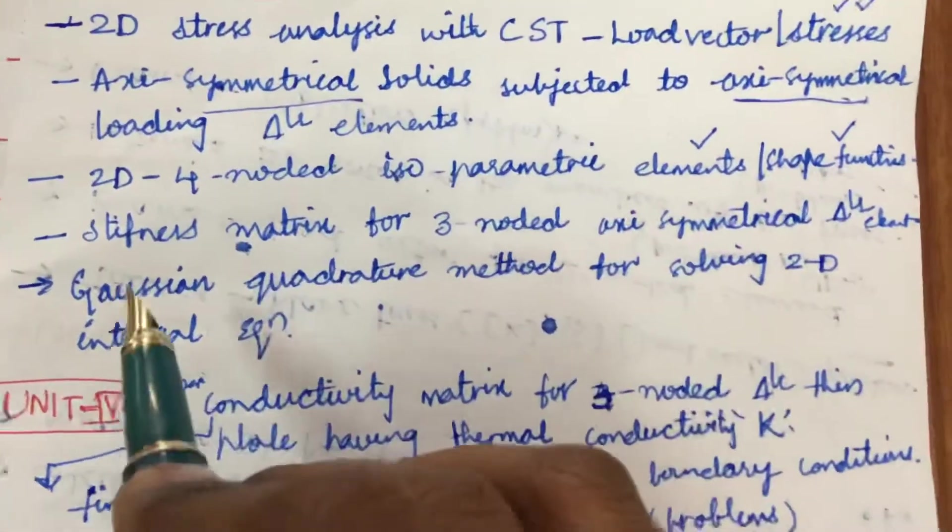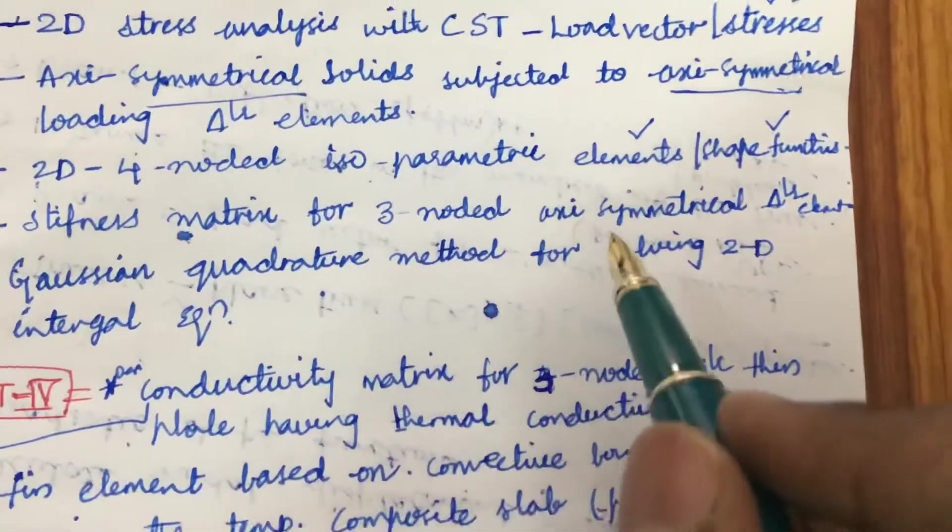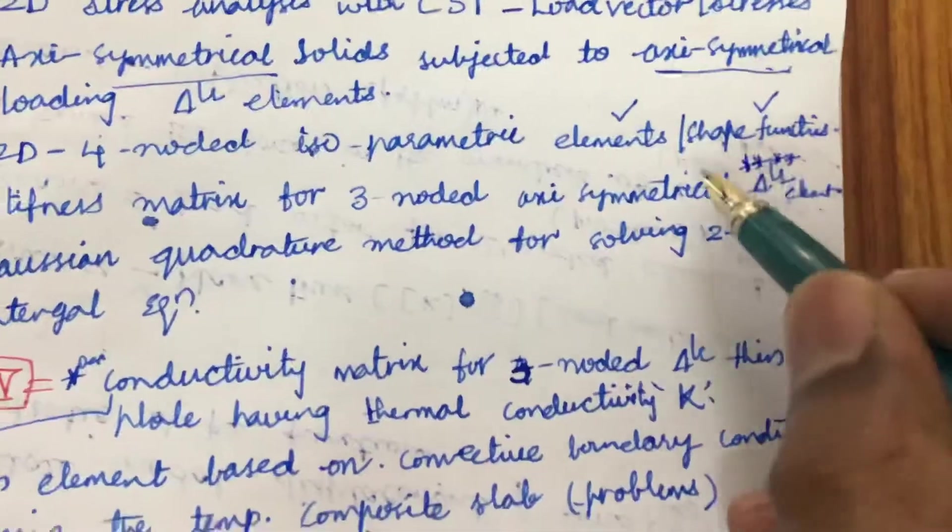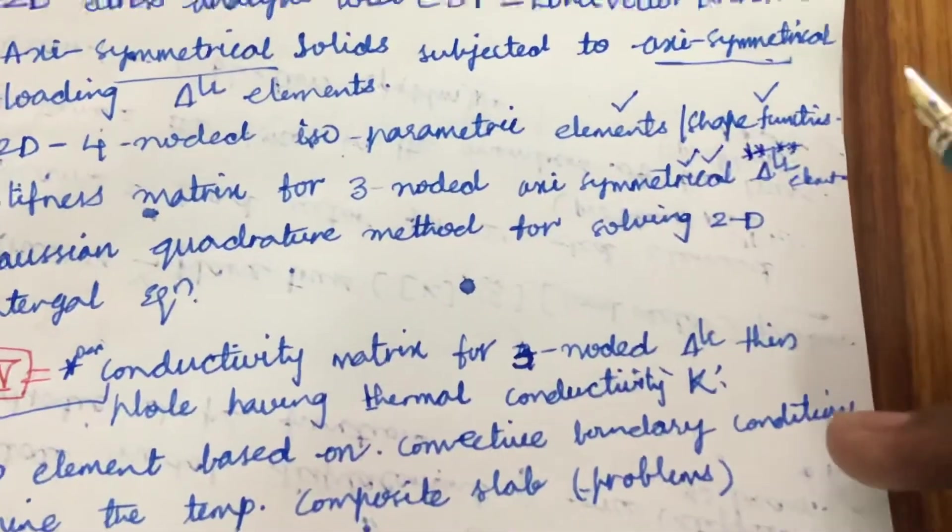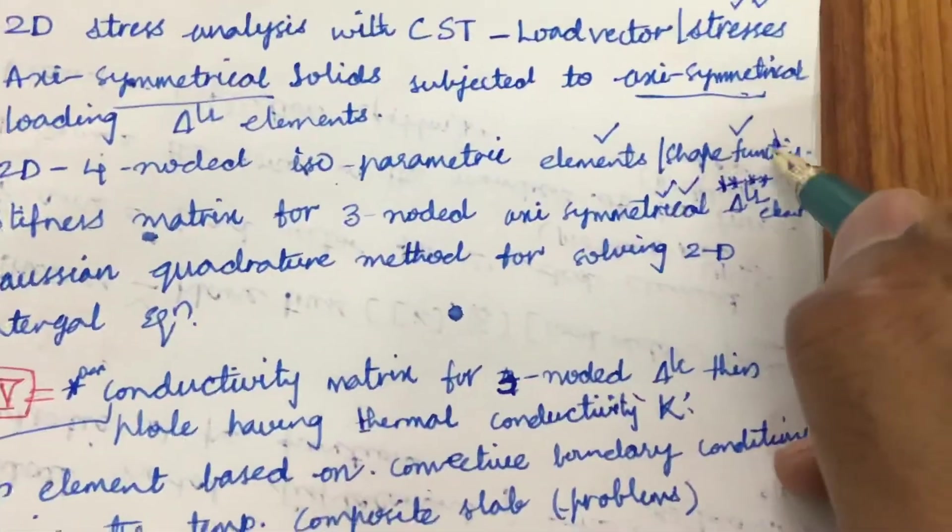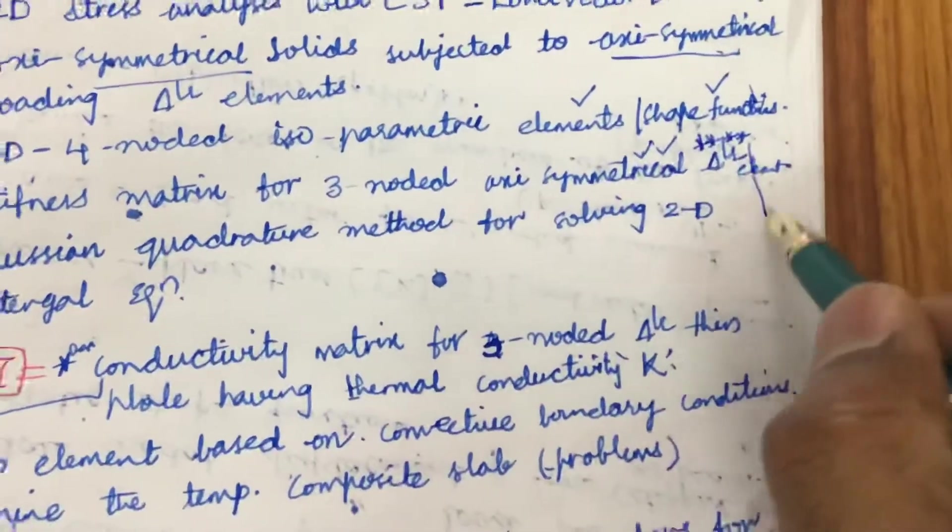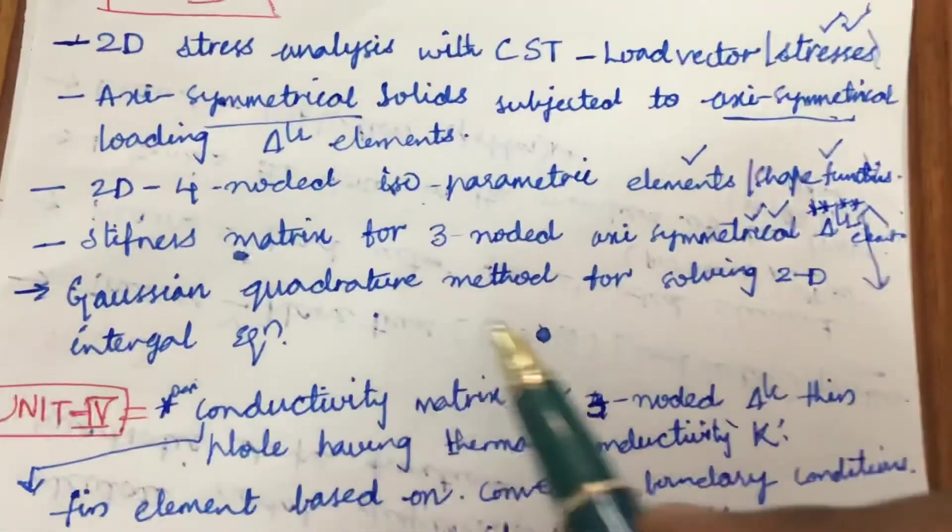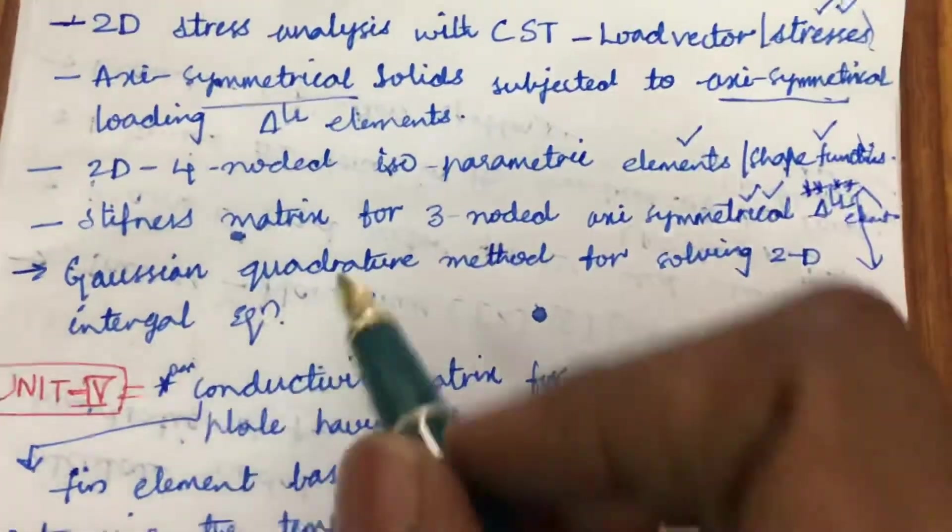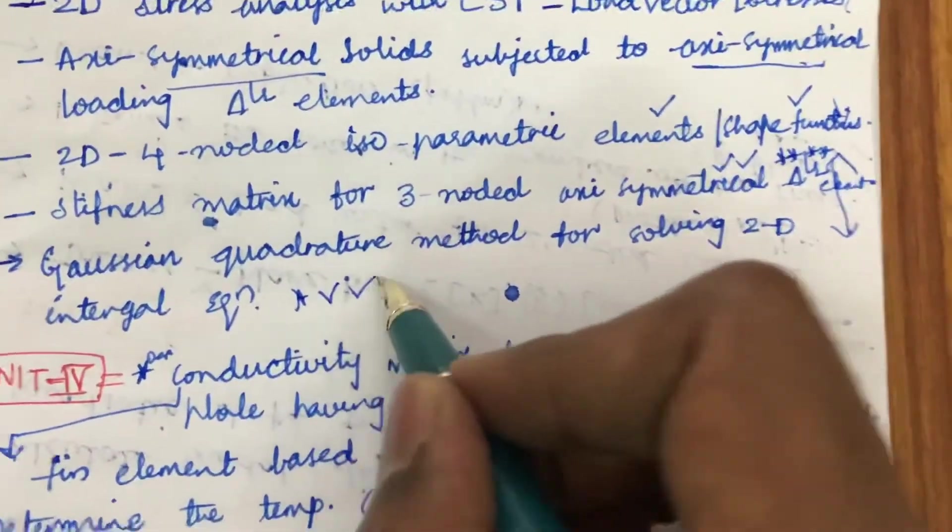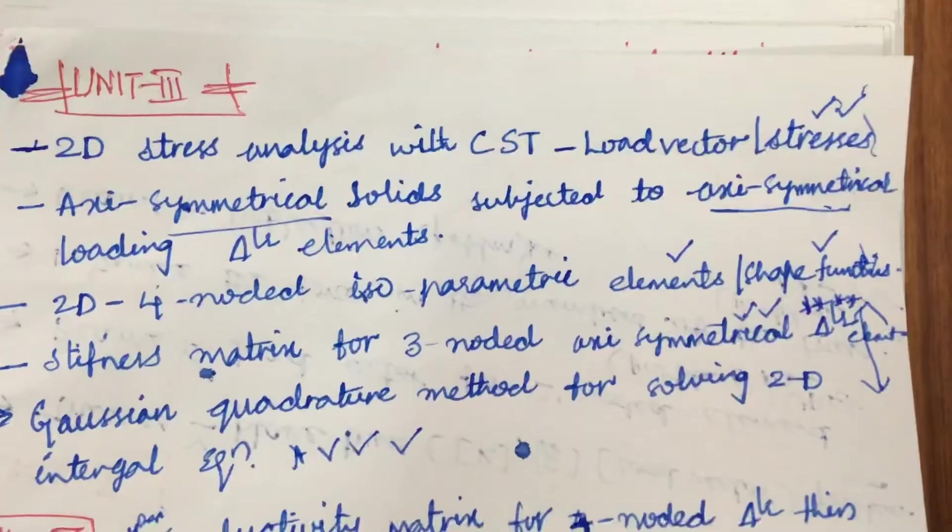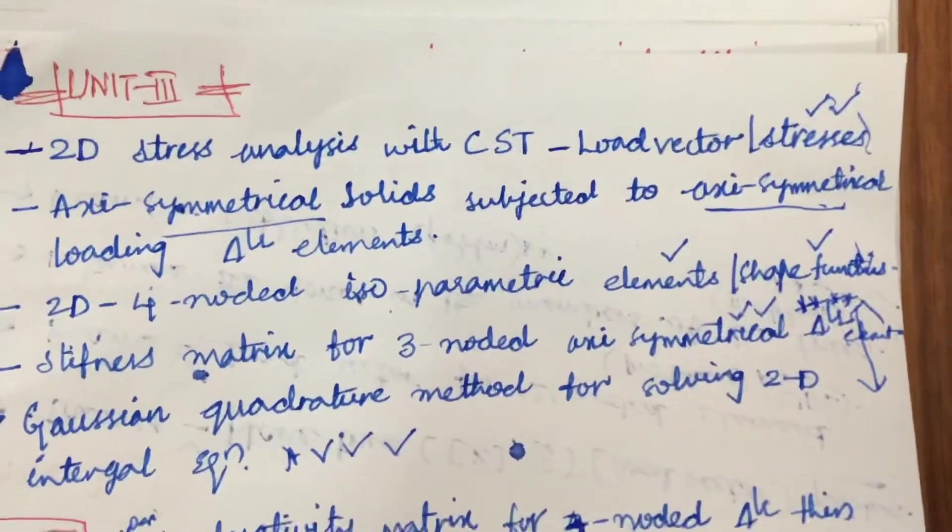2D four-node for the shape functions is a five mark or eight mark question. The stiffness matrix for three-nodded axis-symmetrical triangular element is repeatedly asked in the previous year question papers. We can expect these to be the fifth question and these two may be the sixth question. Later, Gaussian quadrature method for solving 2D integral equations as well as problems related to it. Do not just work out the derivation and do expect even sometimes direct 15 mark questions related to the problem in the course FEM.